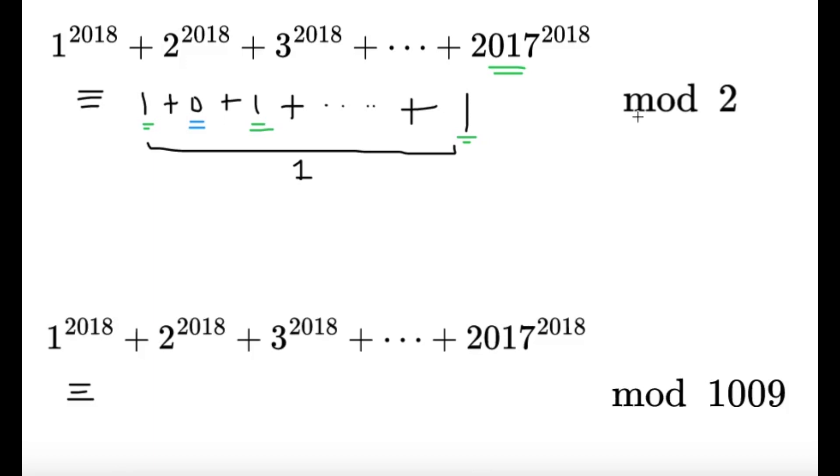We would get the same sum, but under modulo 1009. Modulo 1009 is a little bit more complicated, but that's not a worry since 1009 is a prime number. So we can use Fermat's little theorem. Fermat's little theorem states that if we take a and then if we raise it to p minus 1, where p is a prime number, we can say that this number is 1 modulo p. It should be given that the GCD of a and p should be 1.